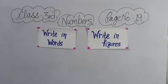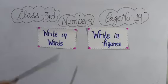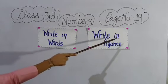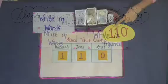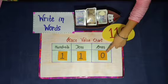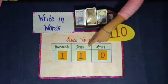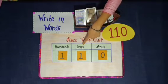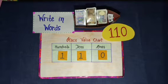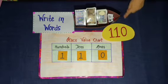Hello students, today we will learn how to write numbers in words and also write in figures. It is number 110. Digit 0 at 1's place, digit 1 at 10's place, digit 1 at 100's place. Let's count currency notes according to the number 110.